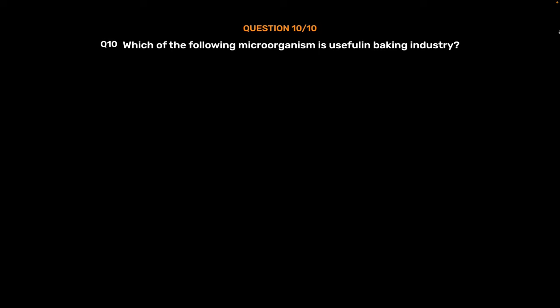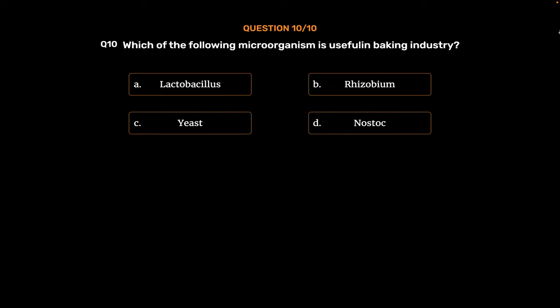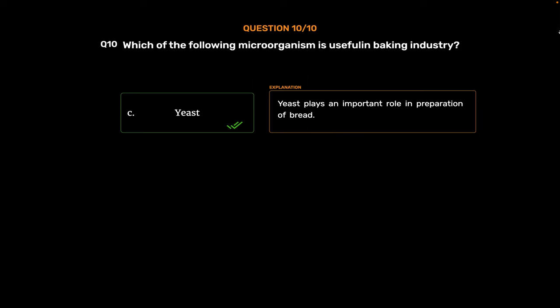Question No. 10: Which of the following microorganisms is useful in the baking industry? Option A: Lactobacillus. Option B: Rhizobium. Option C: Yeast. Option D: Nostoc. The correct answer is Option C, Yeast. Yeast plays an important role in the preparation of bread.